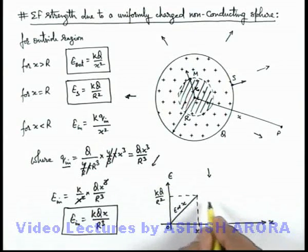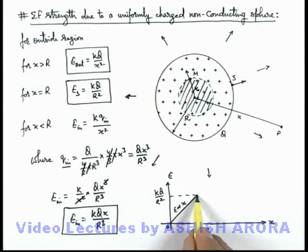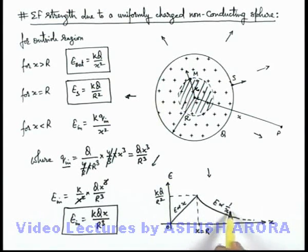Outside, it is a similar situation which we already studied in case of a conducting or hollow sphere, which will drop as inversely proportional to x². This is the relation we use.